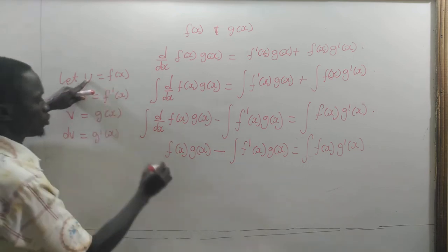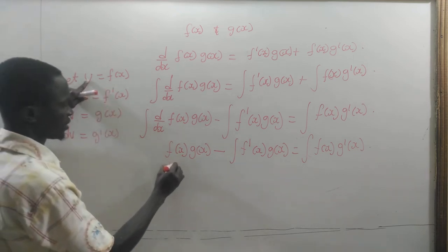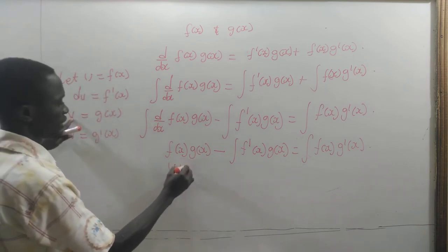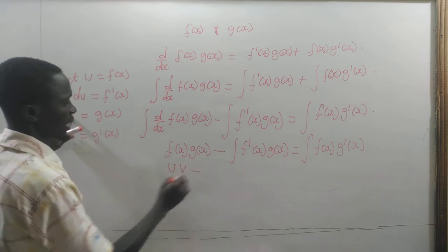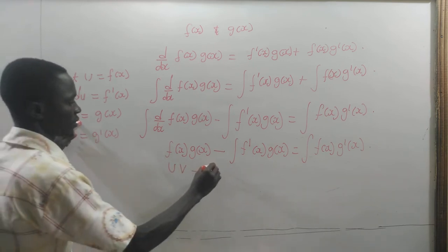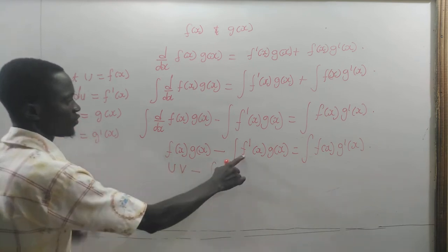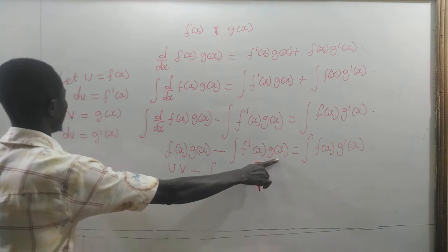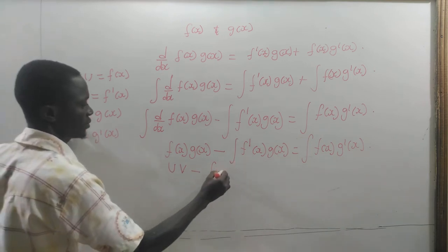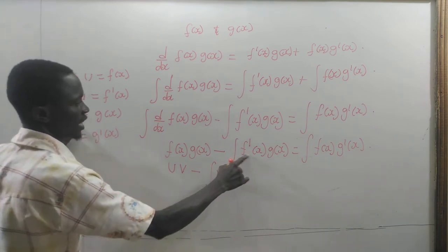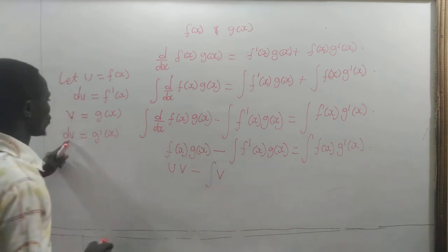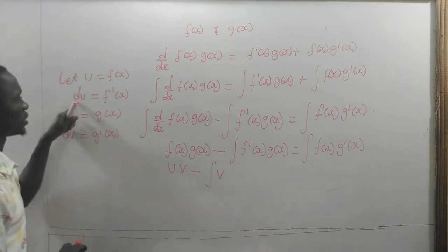We have u equal to f of x, v equal to g of x, and f prime of x equal to du.